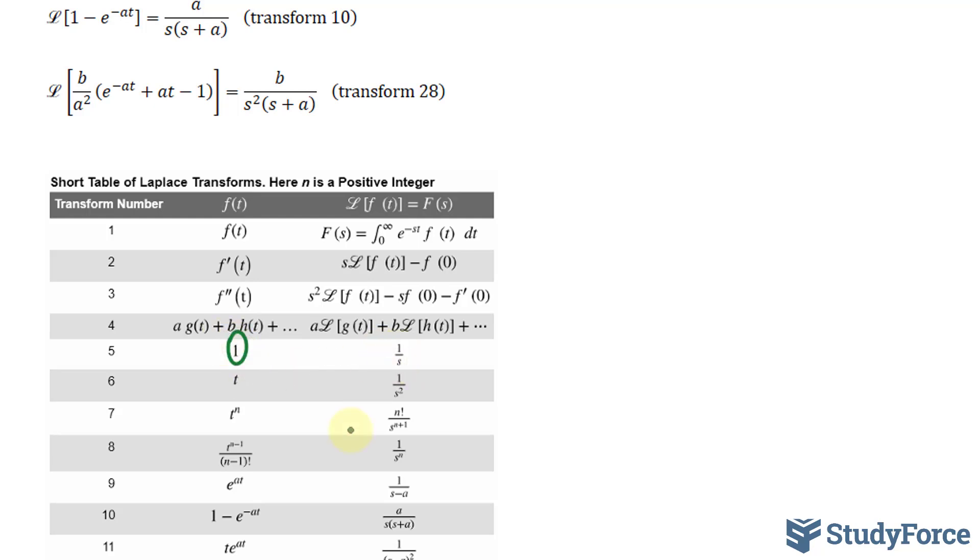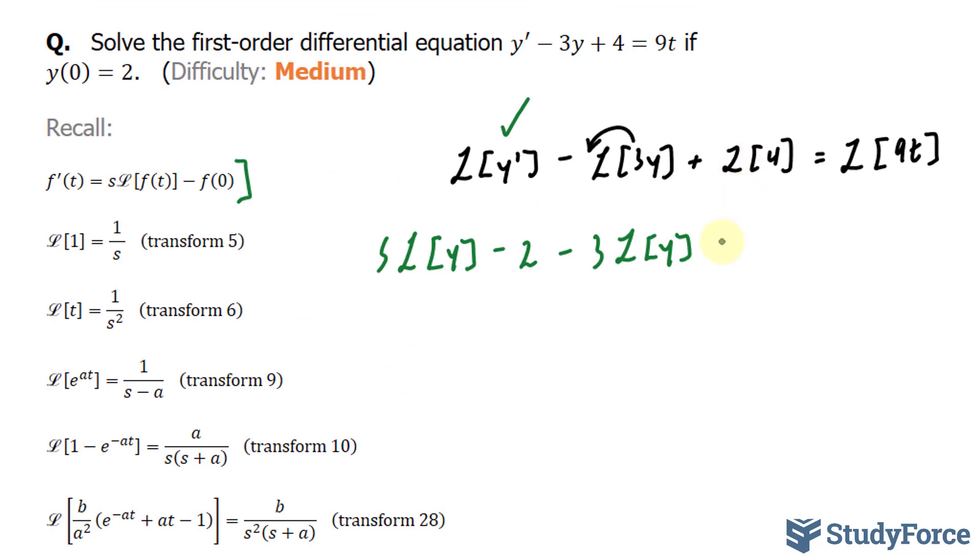So in our case, I'll multiply it by 4. This becomes 4 times 1/s.